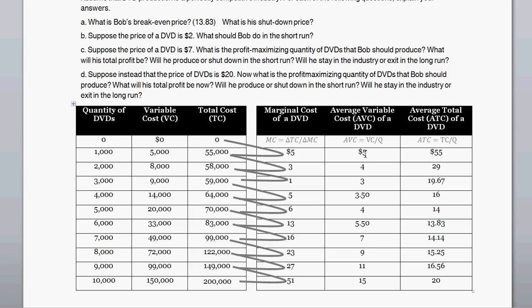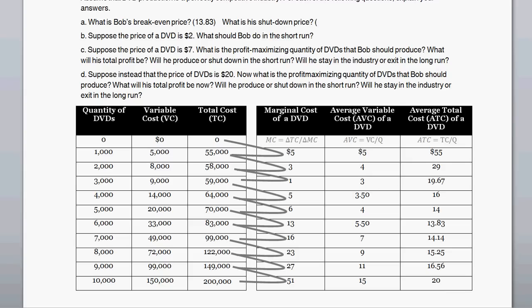The shutdown price is the price at the minimum of the average variable cost. In this case, the minimum average variable cost is $3, so the shutdown price is $3. At anything below $3 — say $2 or $2.50 — the firm isn't even covering its variable costs. It can't pay for its inputs or its workers. So anything below $3 doesn't cover variable costs, and the firm will choose to shut down. It's in its interest to shut down when the market price is below $3.